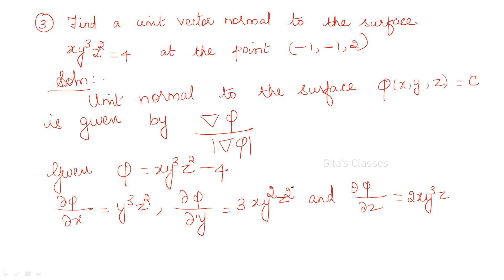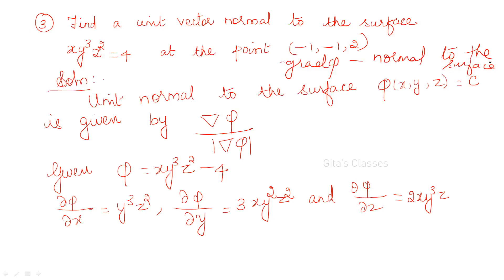Next: find the unit vector normal to the surface xy³z² = 4 at the point (−1, −1, 2). Always remember: the gradient of phi gives the normal to the surface. The question may ask for the normal or the gradient — normal to the surface is del phi. Unit normal means del phi divided by the modulus of del phi.